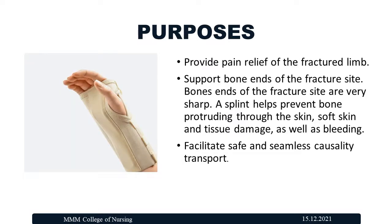Purposes of the splint: to provide pain relief for the fractured limb, to support bone ends at the fracture site, to help prevent bone protruding through the skin, sharp skin and tissue damage, as well as bleeding. It facilitates safe and seamless casualty transport.